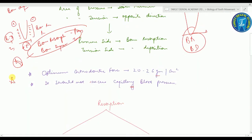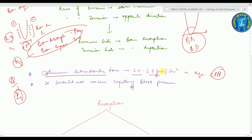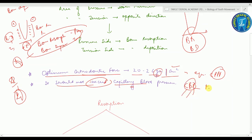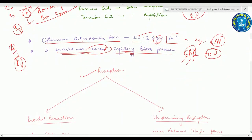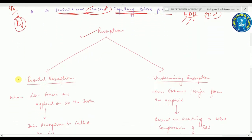An important exam point: the optimum orthodontic force is equivalent to the capillary blood pressure, which is 20 to 26 grams per centimeter square. The orthodontic force should not exceed the capillary blood pressure — this is a commonly asked MCQ. So the orthodontic force should be 20 to 26 grams per centimeter square.